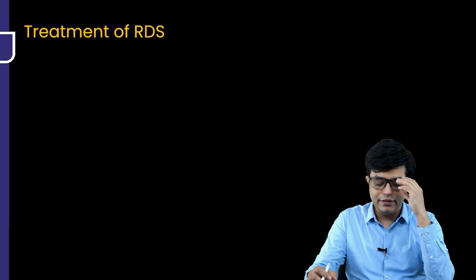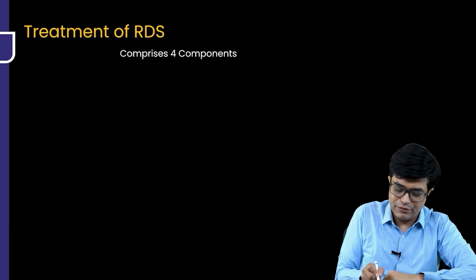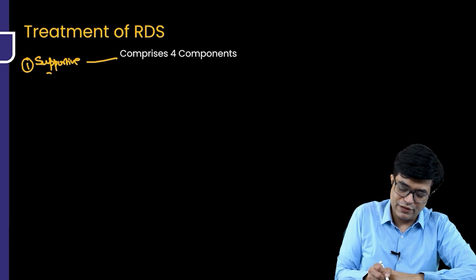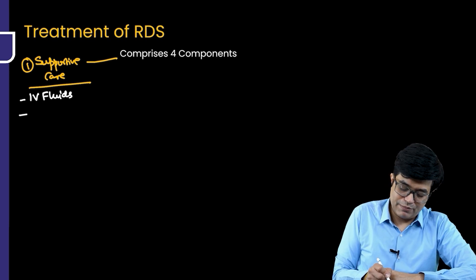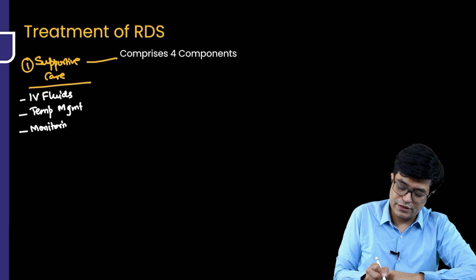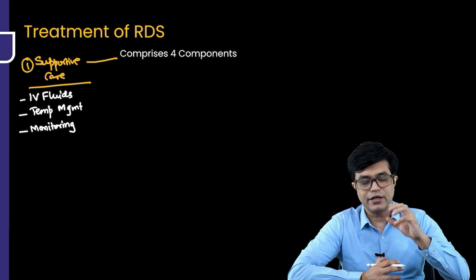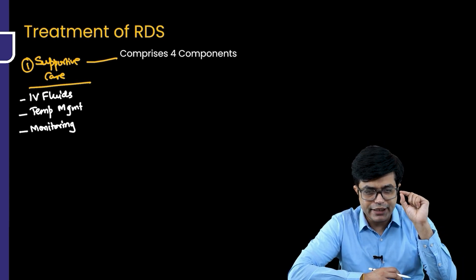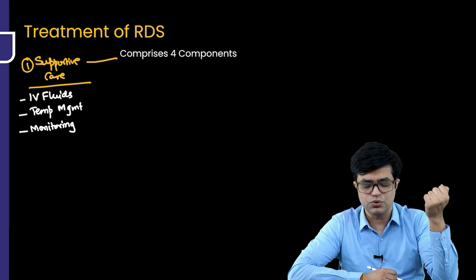Treatment of RDS comprises four components. The first component is supportive care, which includes starting IV fluids, temperature management, and monitoring — of vitals, for shock, SpO2 (preductal SpO2 is preferred), and respiratory monitoring. The Silverman-Anderson score is generally used for respiratory monitoring in these patients.